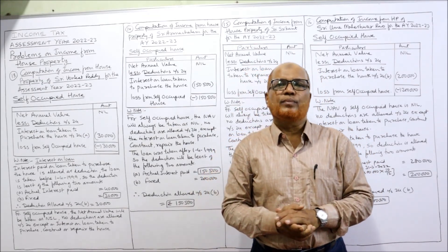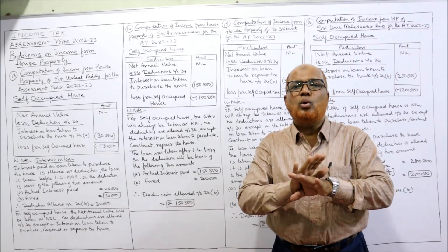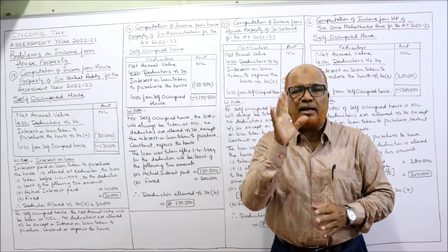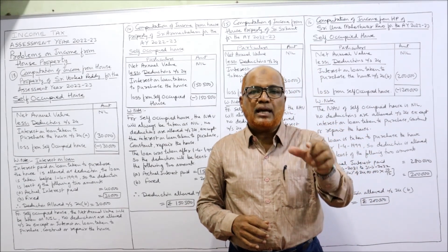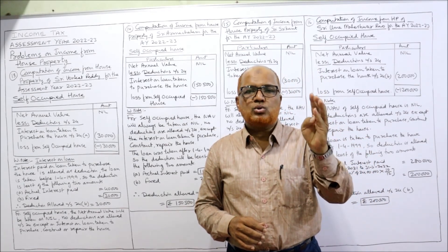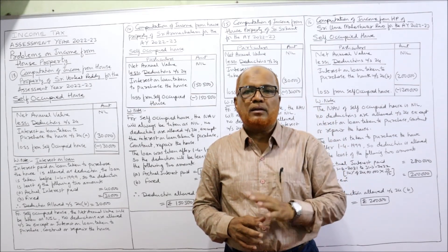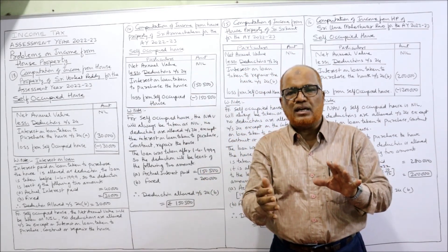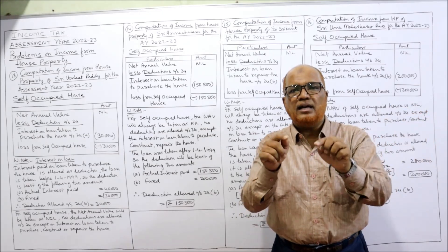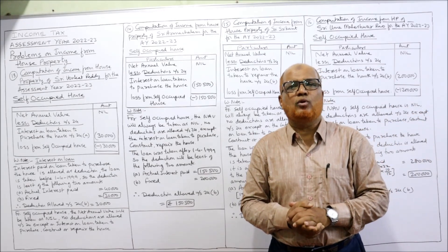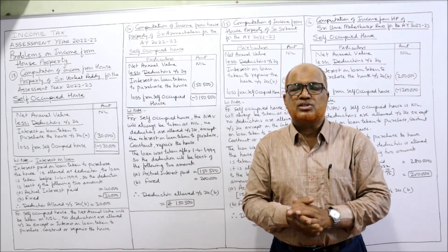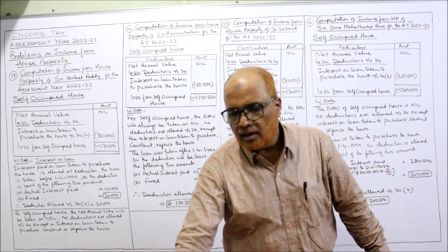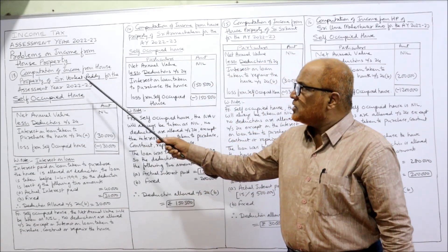From NAV we deduct the deductions under Section 24. But the Income Tax Act says no deductions are allowed under Section 24 except one deduction — that is interest on loan taken to purchase the house, to construct the house, or to repair the house. For these purposes, if a loan is taken and interest is paid, then deduction will be allowed under Section 24B. No other deduction — standard deduction will not be allowed. That is a new point.